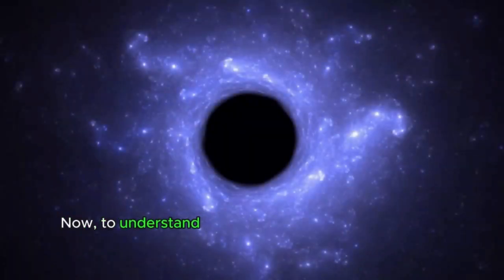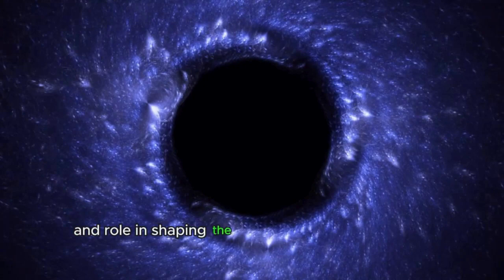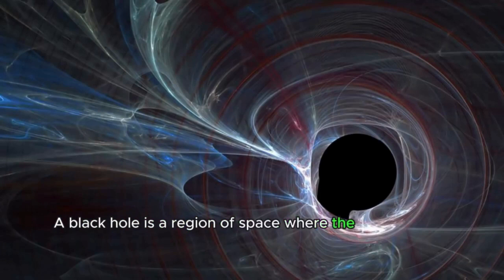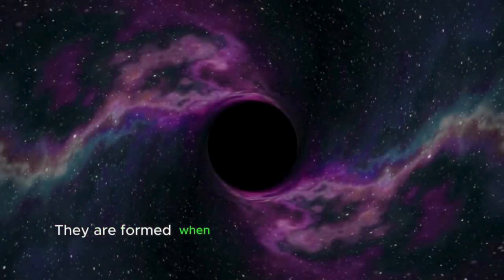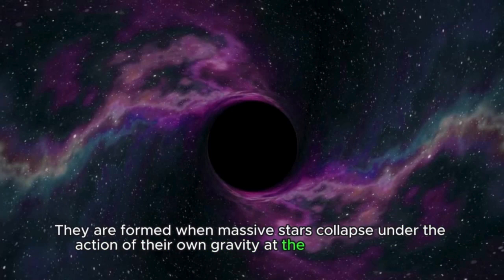Now, to understand how black holes can be related to dark energy, we need to look more closely at their formation, properties, and role in shaping the large-scale structure of the universe. A black hole is a region of space where the gravitational pull is so strong that nothing, not even light, can escape its grip. They are formed when massive stars collapse under the action of their own gravity at the end of their lives, leaving behind a small but incredibly dense point in space.